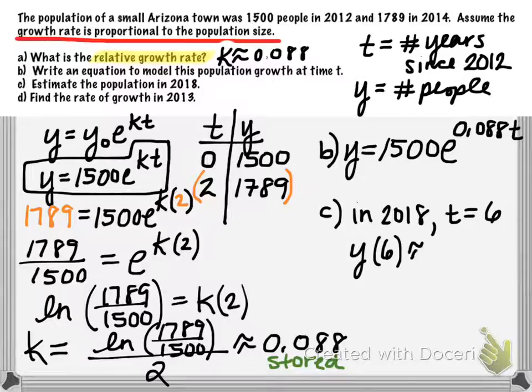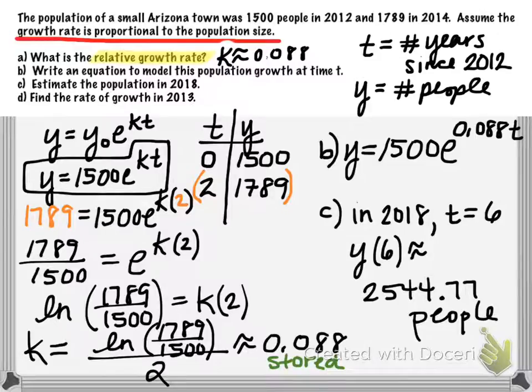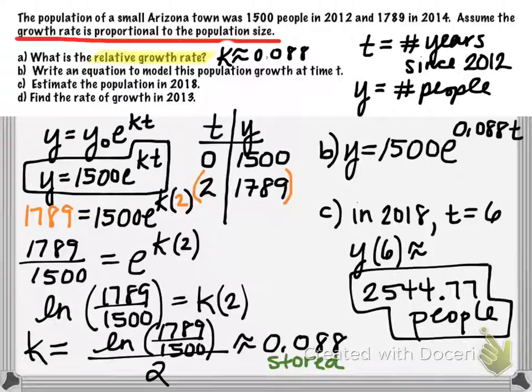And I'm going to go ahead and round to two decimals, even though you can't have a part of a person. But I like to go ahead and put the decimals here so you can check your accuracy on your calculator. It should come out to about 2,544.77 people. That would be how many people were projected to have in this town in the year 2018.